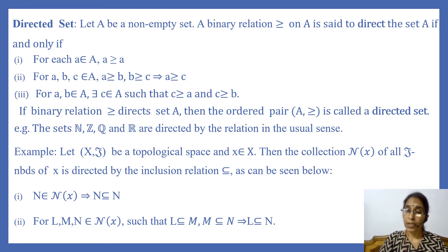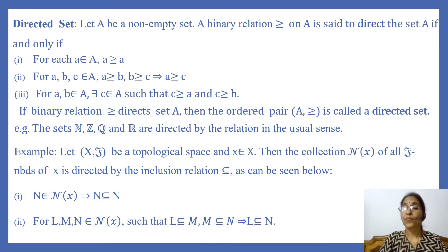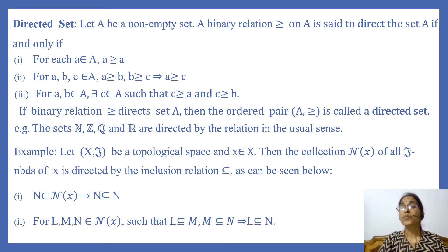Third: for any two elements a, b in A, there exists c in A such that c ≥ a and c ≥ b, i.e., any two elements have an upper bound. If the binary relation ≥ directs A, then the ordered set A together with the relation is called a directed set. For example, the sets ℕ, ℤ, ℚ, and ℝ are directed sets with the usual order.